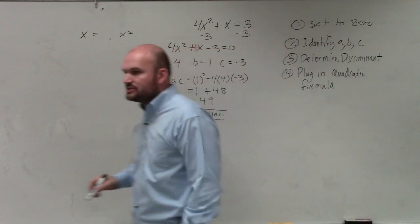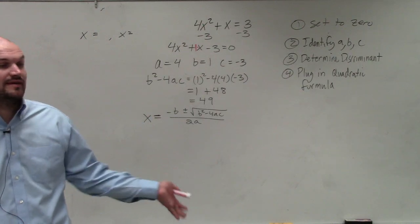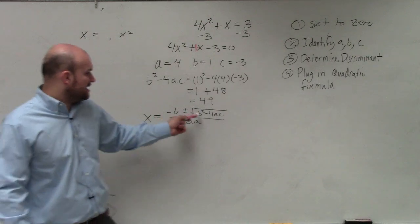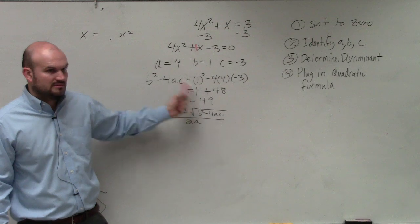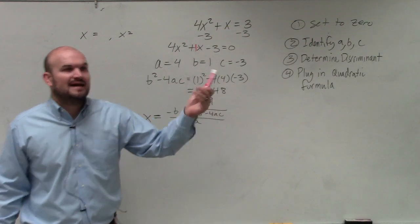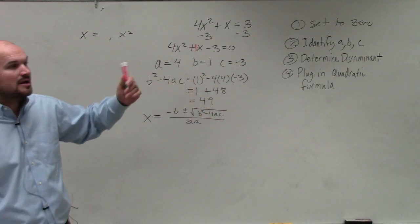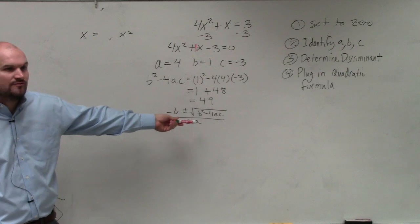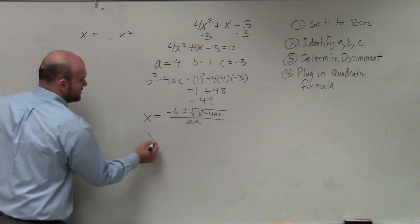So what I want you guys to understand, when you guys write down the quadratic formula, which you are going to have to know on a test, it's not going to be given to you. Do you guys see that the number under the square root is actually the discriminant? So by doing the discriminant, not only did that help us identify the type of solutions, but that also did half of our work for doing the quadratic formula. Now I just plug in my remaining values.